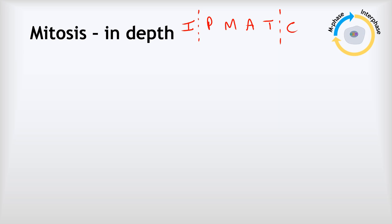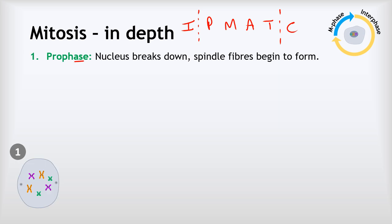The P in IPMATC stands for prophase. During prophase, the nucleus breaks down, releasing the chromosomes to float freely in the cytoplasm, and spindle fibers start to form. In the diagram of prophase, the star-shaped structures are the spindle fibers beginning to form, and our X-shaped chromosomes — duplicated pairs held together at the centromere — are floating freely in the cytoplasm.